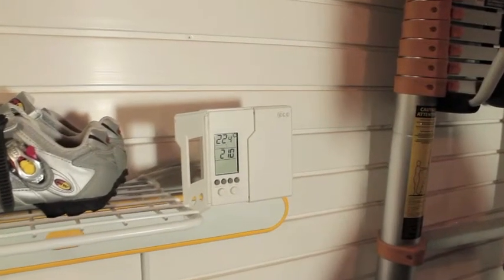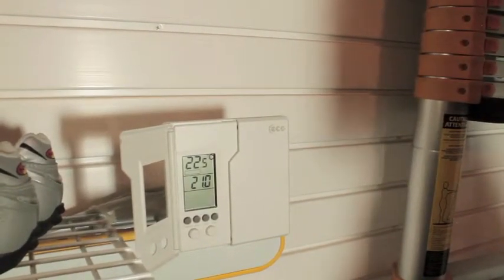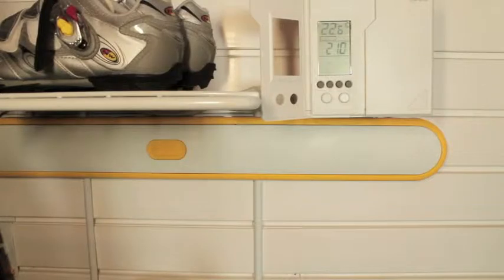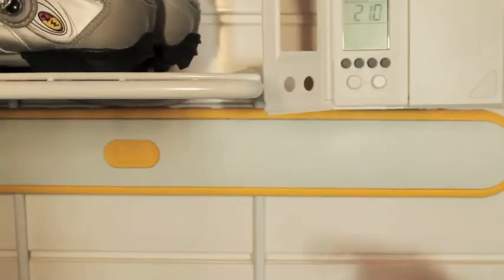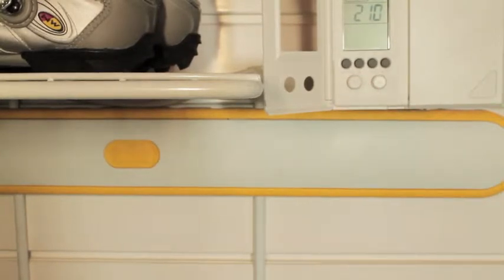Pressing set again advances to the next option which appears as RE. This is the pre-comfort recovery option. When it is set to 1, the thermostat will turn on heating in advance of a program change to get a head start on reaching a warmer temperature. Turning the option to 0 turns off pre-comfort recovery.